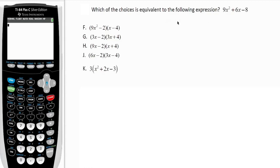Let's look at how to solve this ACT math problem with the TI-84 Plus scientific calculator, fast and easily. The question asks which of the choices is equivalent to the following expression: 9x² + 6x - 8. This is a quadratic expression.